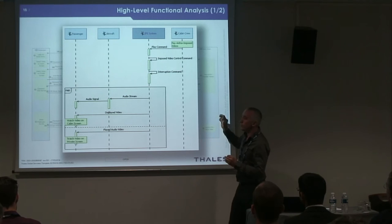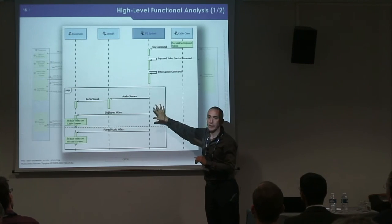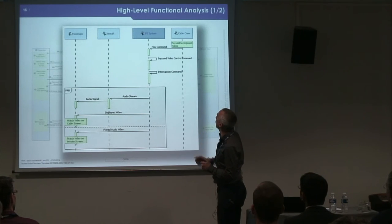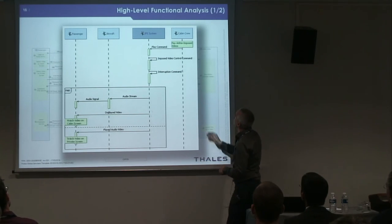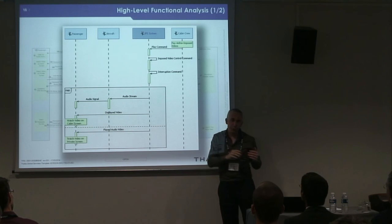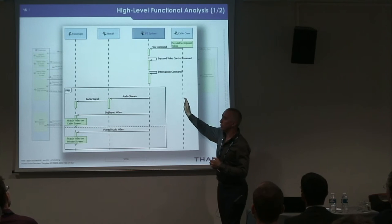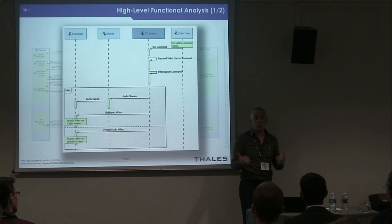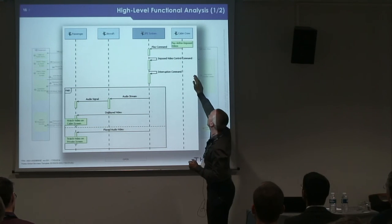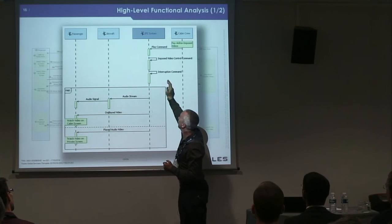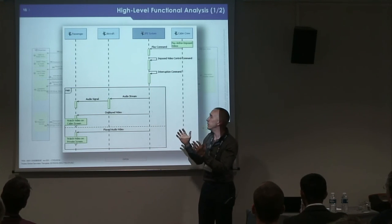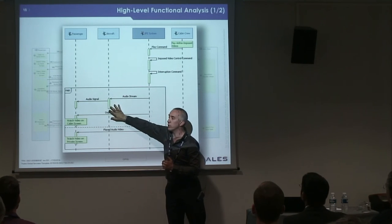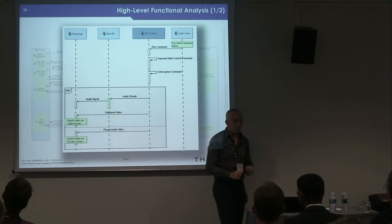Based on this, we illustrate specific paths using either scenarios or functional chains. For example, this one is about starting the play of a movie — not a personal movie for the passenger, but a movie triggered by the cabin crew that explains the safety instructions. The start is with the cabin crew playing airline input videos, talking to the system. We don't know exactly how the system does it, but then we have the outputs: we see this video either on the cabin screen or on the private screen in front of your seat.